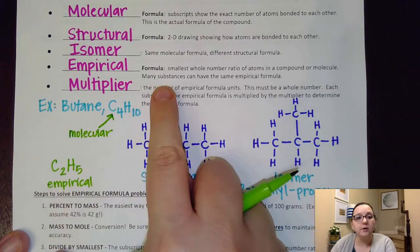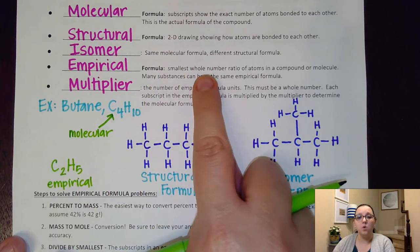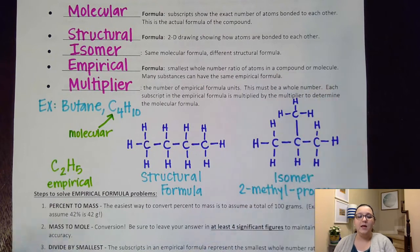So again, the empirical formula is the smallest whole number ratio of atoms. Sometimes the molecular and empirical formulas are the same. For example, in ionic compounds, often the two are the same because the actual structure is in the simplest ratio. But for these organic hydrocarbons, there's a lot of times that they are not the same.